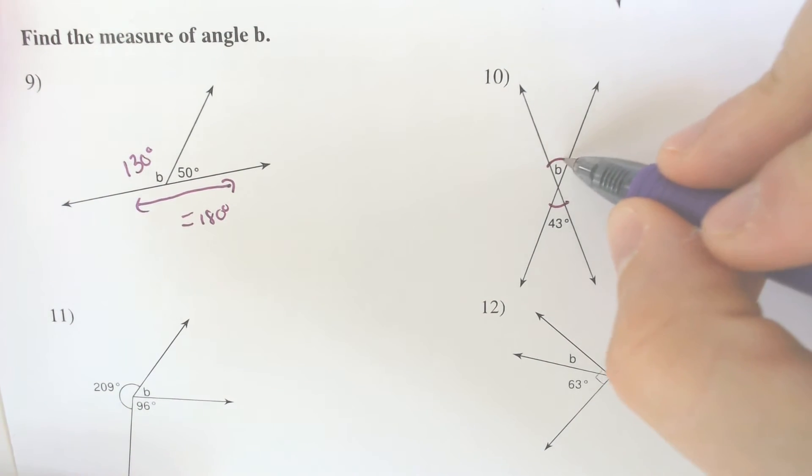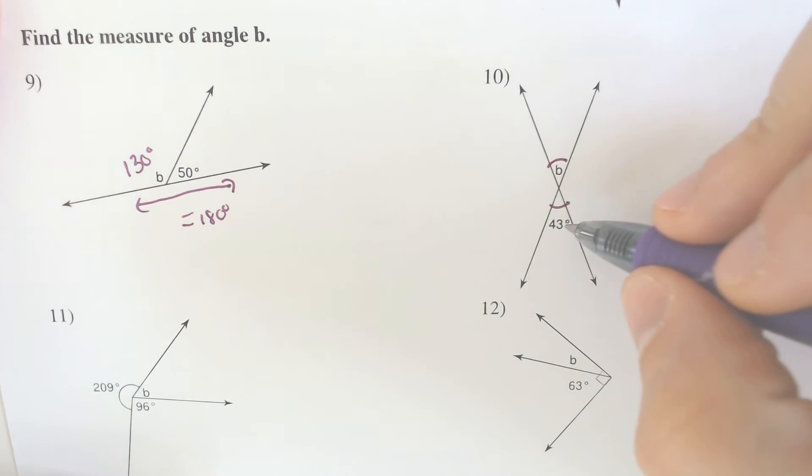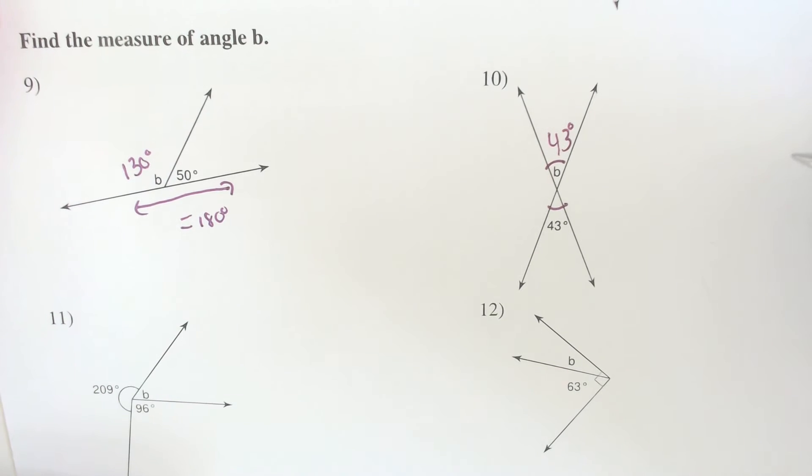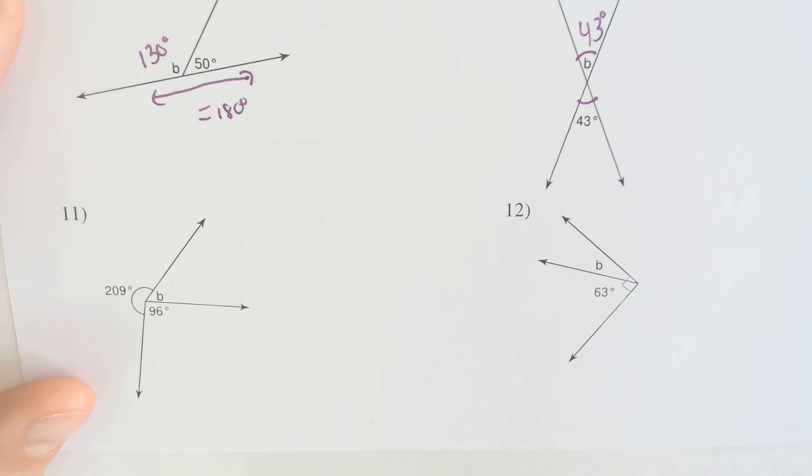Whereas on number 10, look at those. They're across from one another. If they're across from one another they're vertical. If they're vertical, they're equal. 43 degrees.